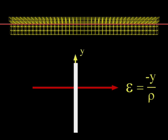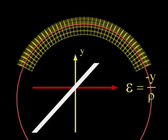If the beam were bent the other way, rho would be negative, and the strain at each point would change in sign, but not in magnitude.